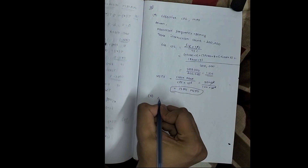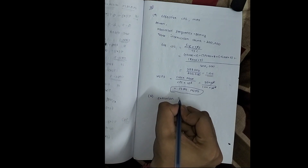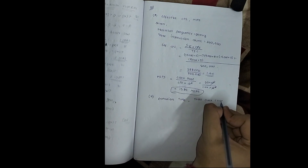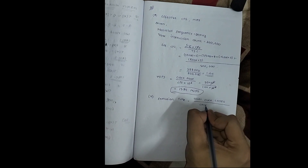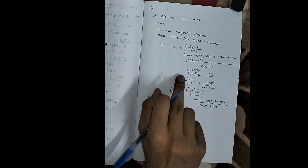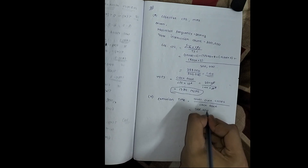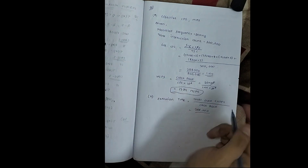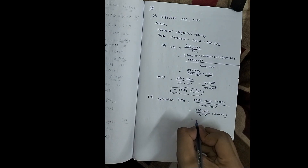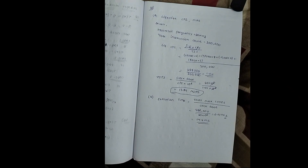Now for part two, we have to find the execution time. The formula is: execution time = total clock cycles divided by clock rate. Total clock cycles is 288,000 and clock rate is 20 × 10^6. This gives 0.0144 seconds, which in milliseconds is 14.4 ms. So the execution time is 14.4 milliseconds.